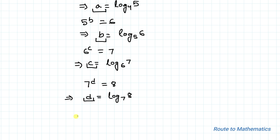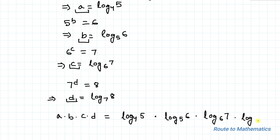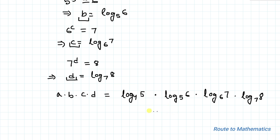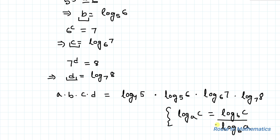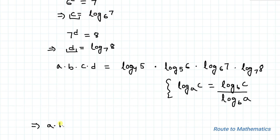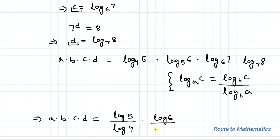We are asked to find a times b times c times d. So we have log base 4 of 5, times log base 5 of 6, times log base 6 of 7, times log base 7 of 8. We apply the change of base rule: log base a of c equals log c divided by log a. Applying this, a times b times c times d equals log 5 over log 4, times log 6 over log 5, times log 7 over log 6, times log 8 over log 7.